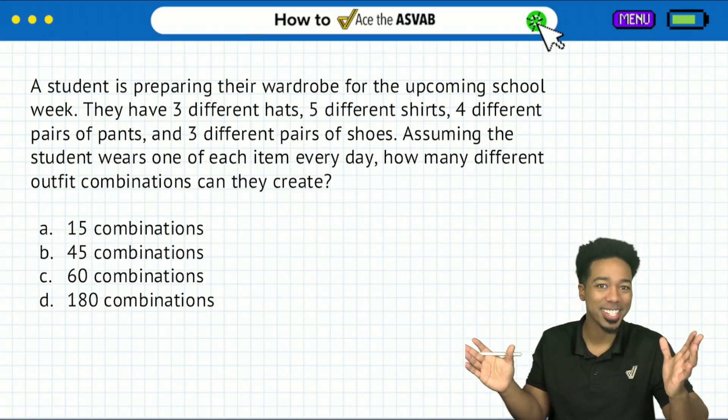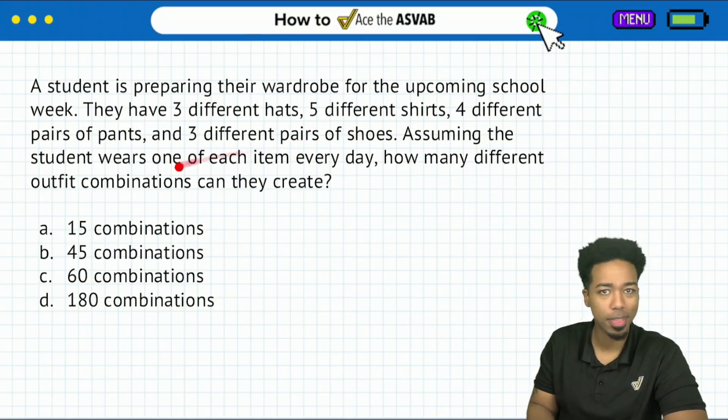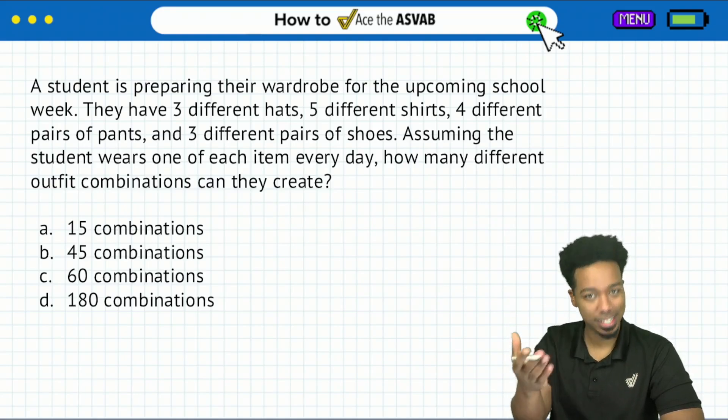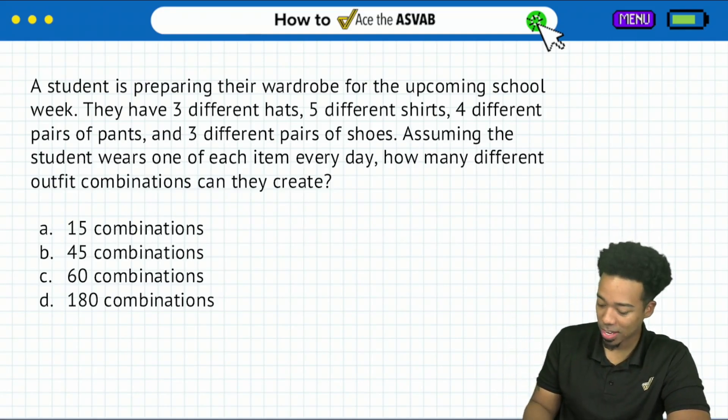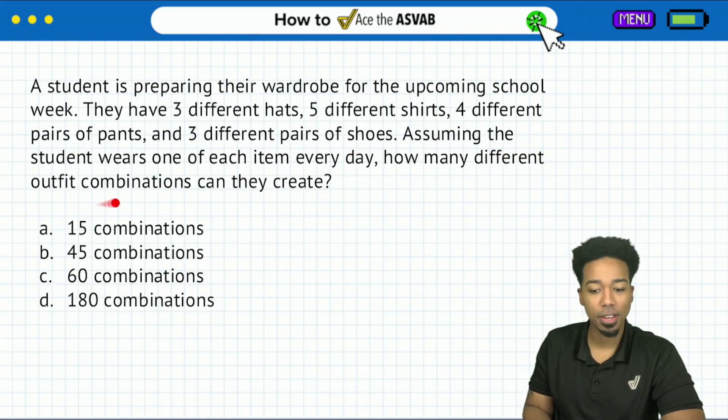So again, let's avoid test anxiety and let's get to work here. First things first, as always, we're going to read the question, not beginning from all the way up there. No, we're going to start from where the question sentence begins. So that's going to be right here. Assuming the student wears one of each item every day, how many different outfit combinations can they create?